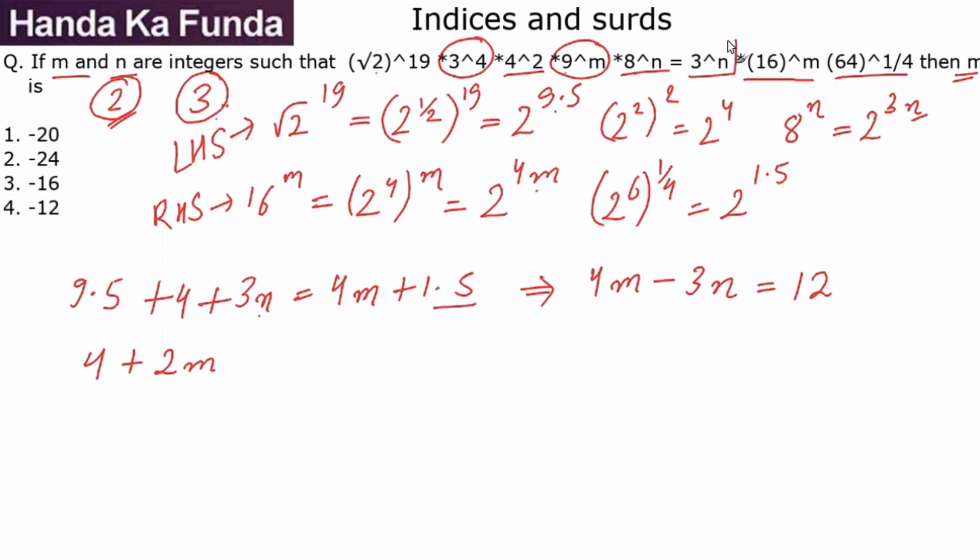On the right-hand side, I have simply one term which contains 3, so this is equal to n. Now I need 3n here, so let me multiply this entire equation with 3. So I will get 12 plus 6m is equal to 3n.